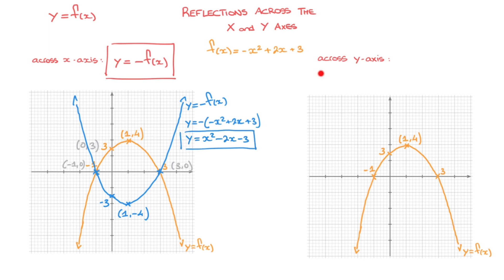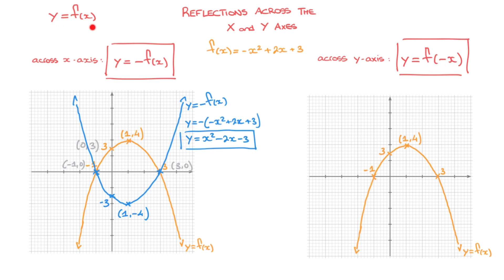Now let's see how to reflect a curve across the y-axis. Given any curve y equals f of x, we can reflect it across the y-axis with the transformation y equals f of negative x, or y equals f of the opposite of x. Looking at this transformation, we can tell right away that we're dealing with a horizontal transformation. The changes happen inside the function — inside these parentheses — which means we're changing the input, and changing the input changes the x-coordinates. So it's a horizontal transformation.